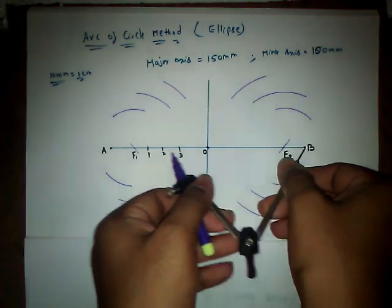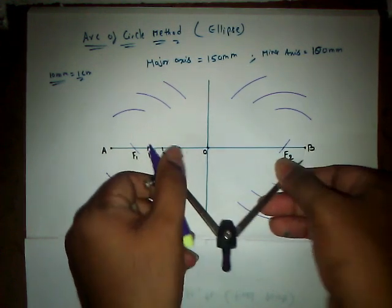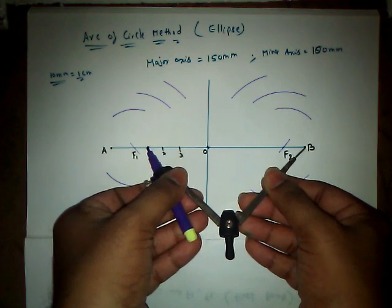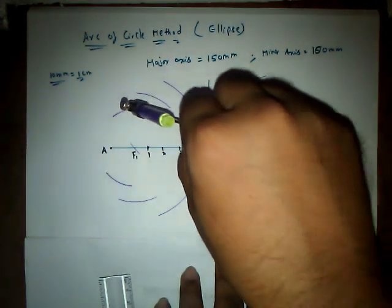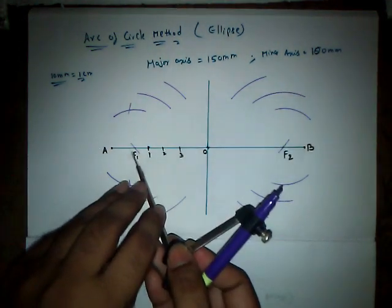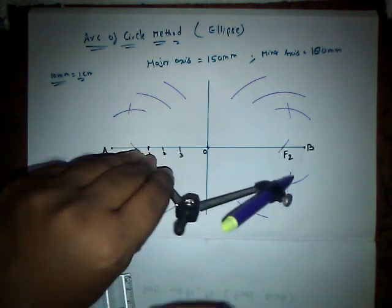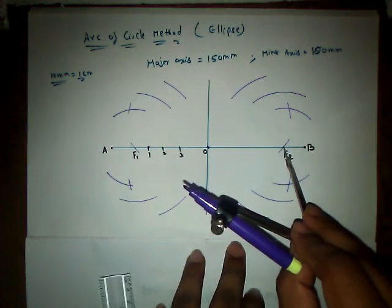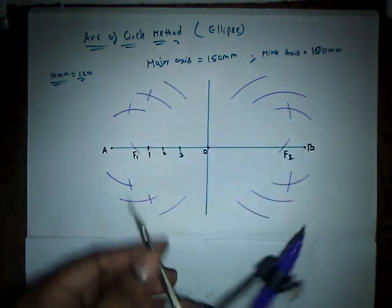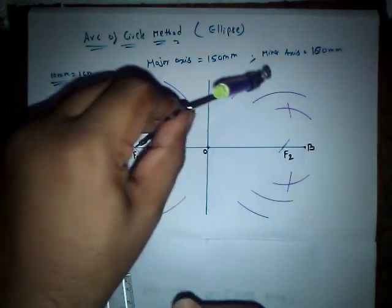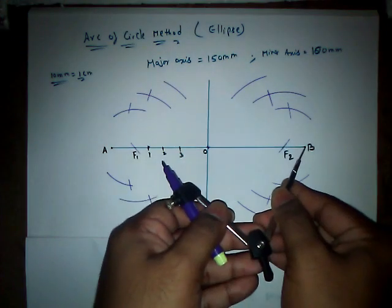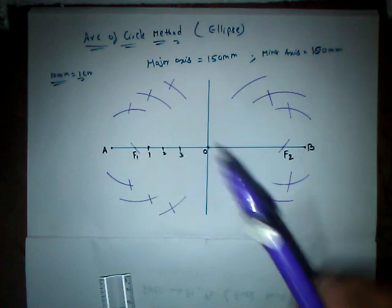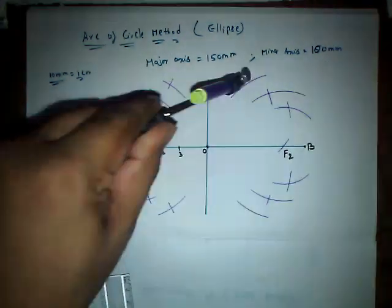So the first part is B21 as radius. Now F2 as center, cut the previous arcs over here and here. With the same radius and F1 as center, cut the previous arcs. Now with B22 as radius, F2 as center, let us cut the opposite arcs. And with the same radius, now with F1 as center, let us cut these two previous arcs. Finally, B23 as radius, F2 as center, let us cut the previous arcs. And now F1 as center, let us cut the previous arcs.